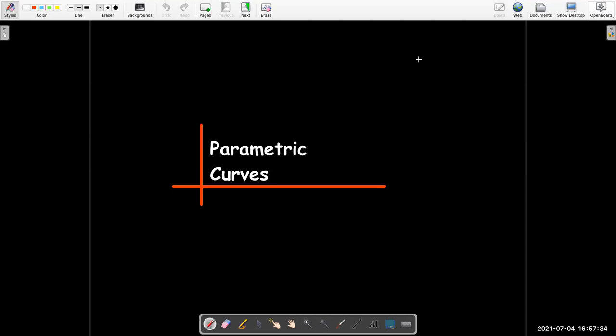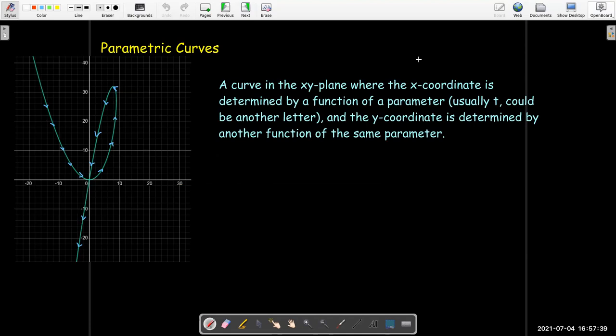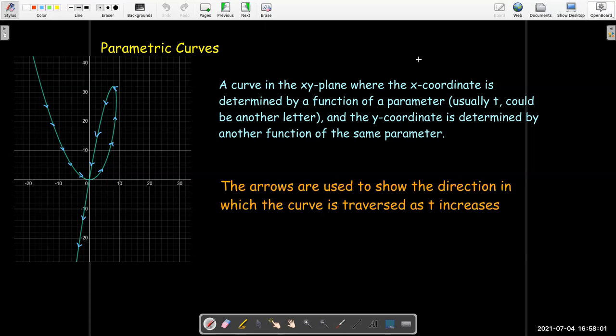In this short video we're going to talk about parametric curves. A parametric curve is a curve that's defined by two functions. So the x-coordinate and the y-coordinate have separate functions and both of them depend on a single parameter or variable t. Usually we use t, though it could be any other letter as well. When we sketch the graph of a parametric curve, we put these little arrowheads to indicate the direction in which the curve is traversed as t increases.